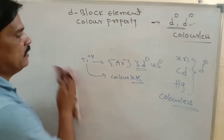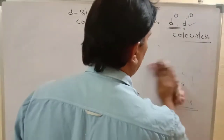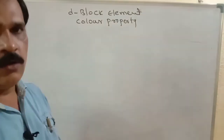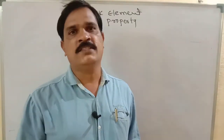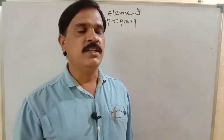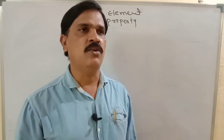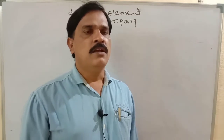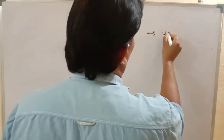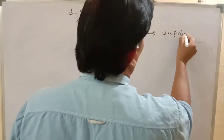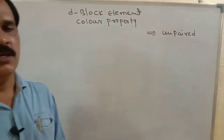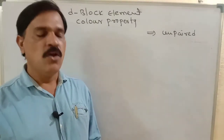What about colored ions? Now I have explained colorless compounds. Let me discuss colored compounds and how to identify the trick for them. Generally, the presence of unpaired electrons in a D orbital results in colored ions.